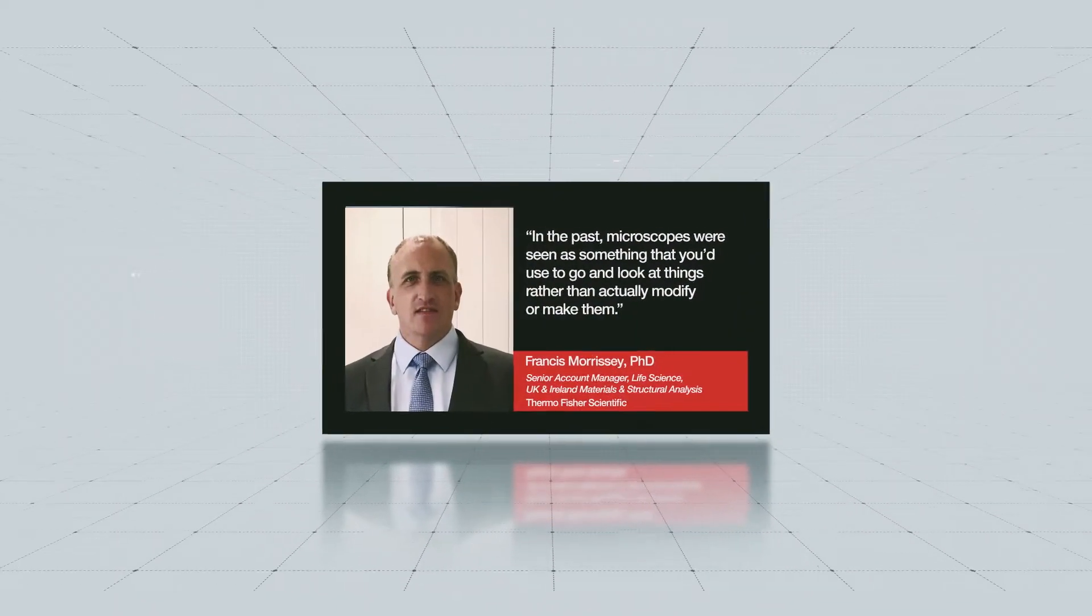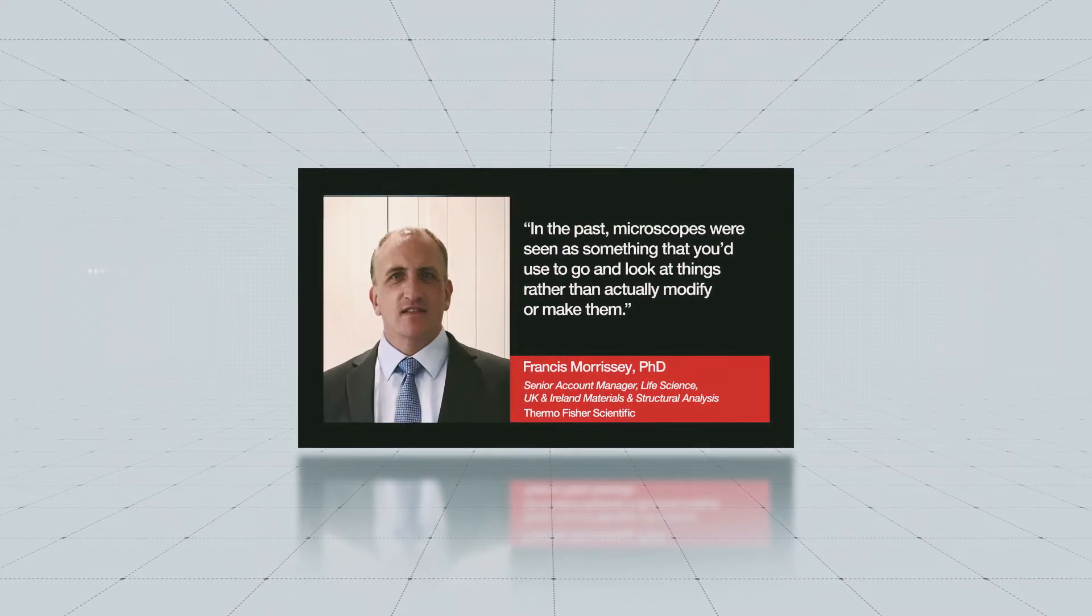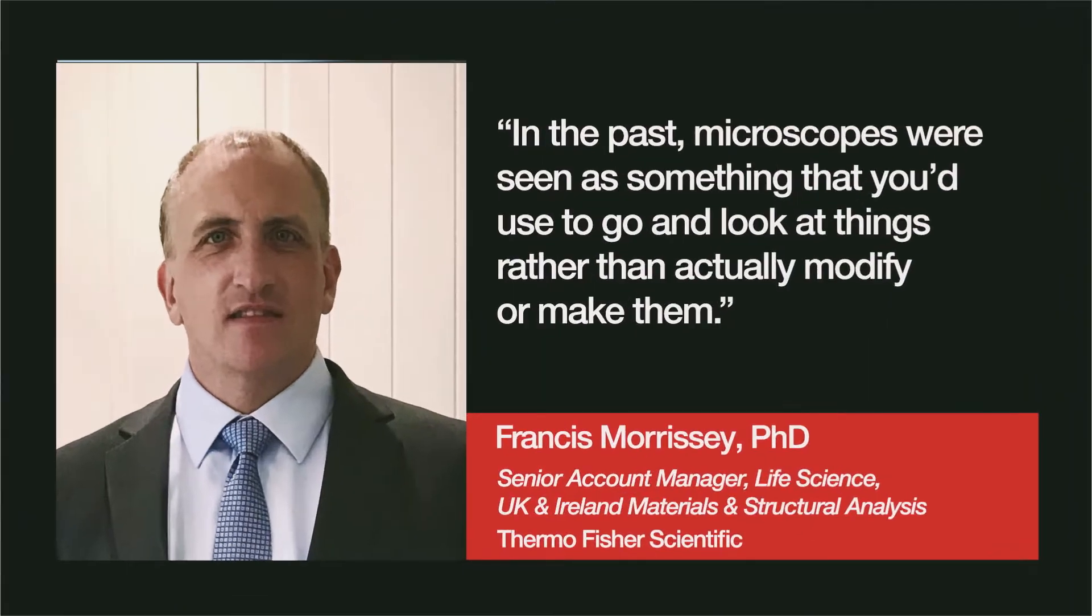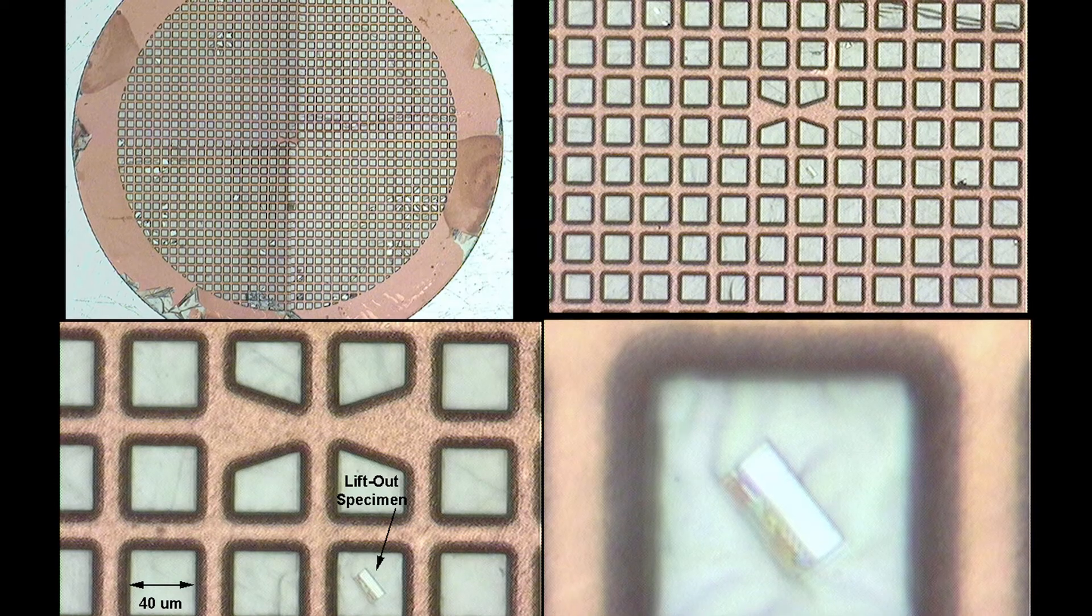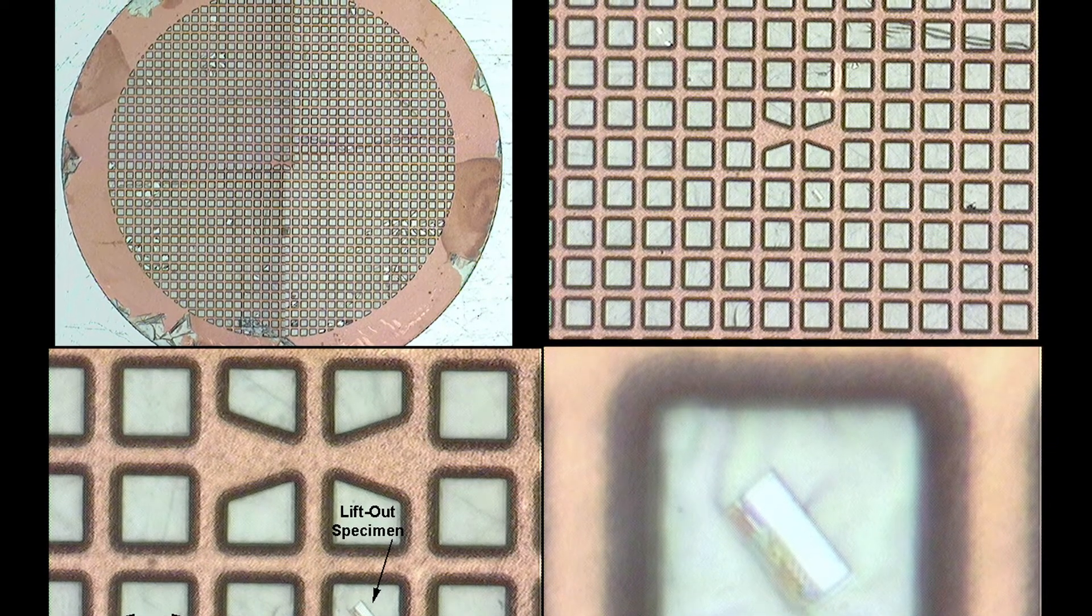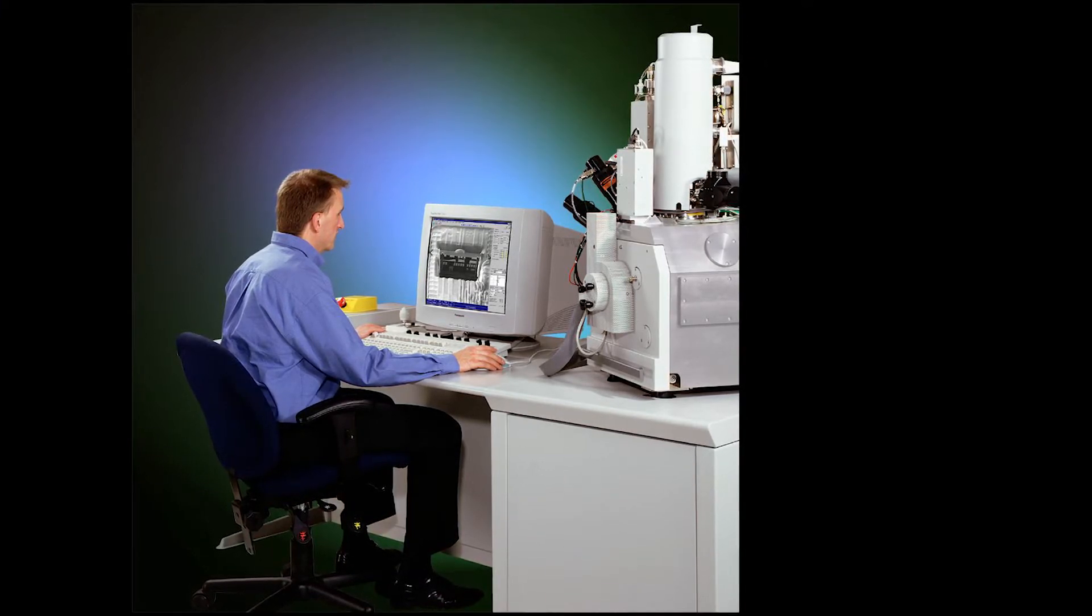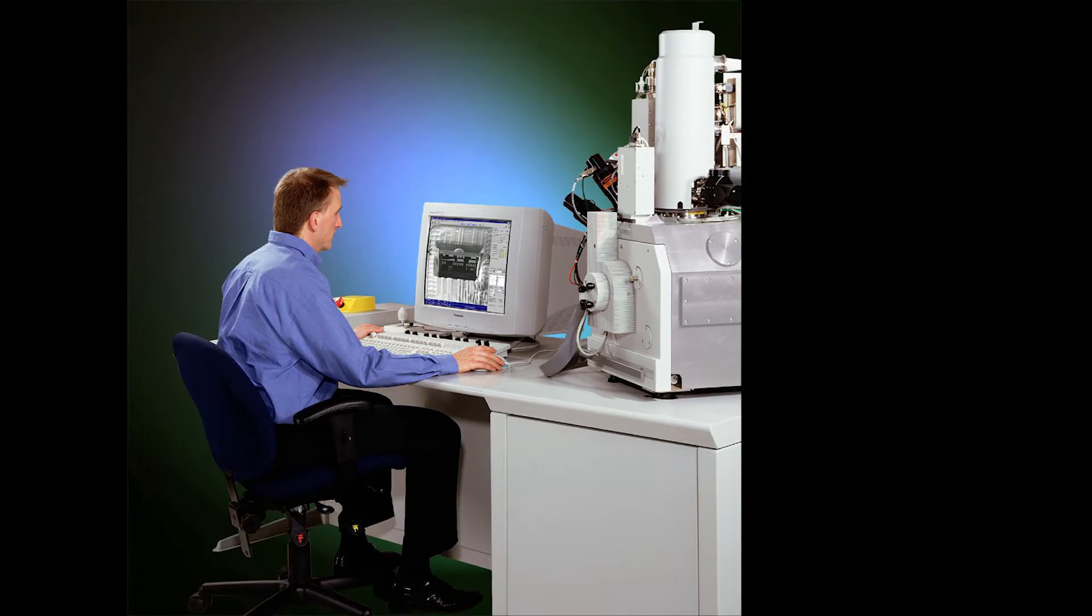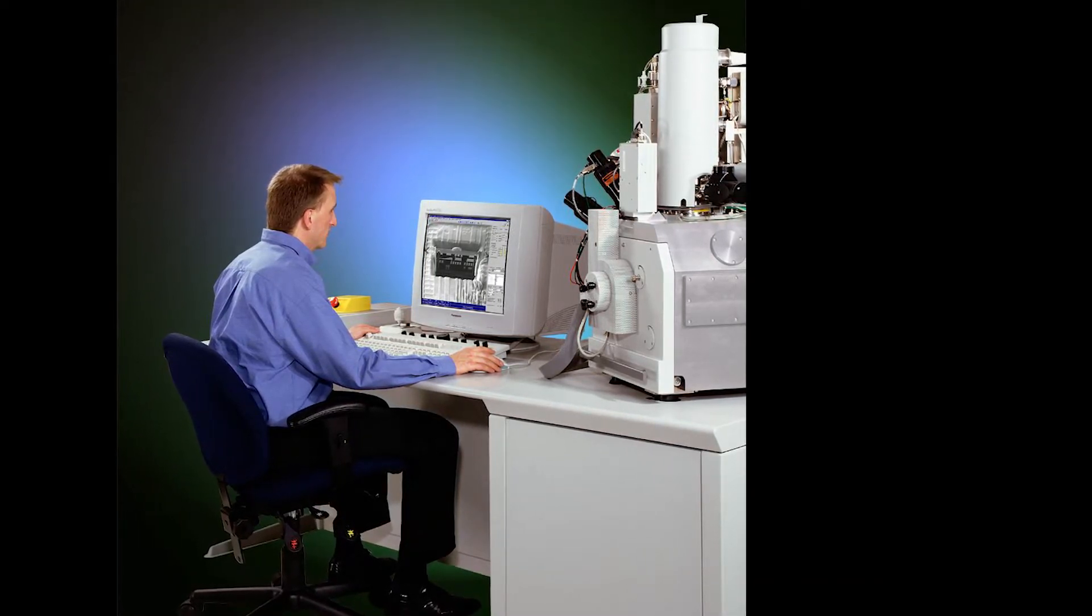My first demonstration was with Professor Rickard Wirth, and he came from the GFZ Centrum in Potsdam, near Berlin. And he brought along a pre-thinned sample, 100 microns thick and stuck on a little copper grid. And it had all these small olivine inclusions in a substrate. And he wanted me to try and thin down this section and capture one of these small inclusions, which he was expecting to be diamond within that thin section.